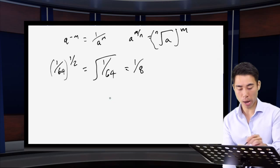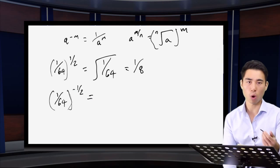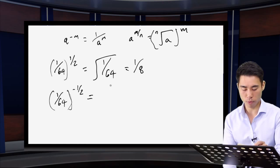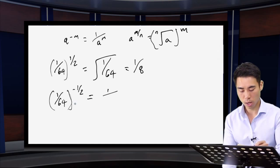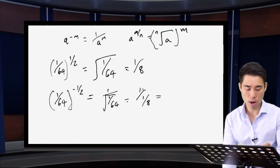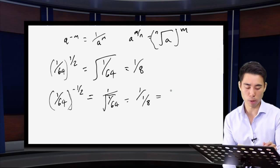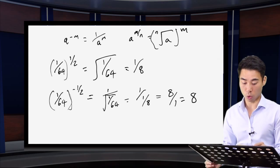Now how does this change when the exponent is negative? So for one over 64 all raised to the power of minus one half: the negative sign means it's one over something — one over the result of one over 64 to the half, which is one over one over eight. Multiply top and bottom by eight, which gives eight over one, or just eight.